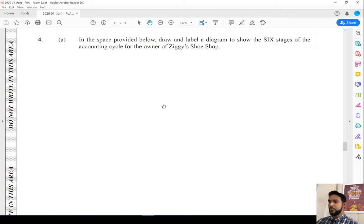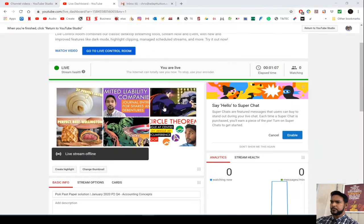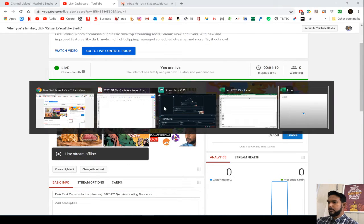Let's get to the question. In the space provided below, draw and label a diagram to show the six stages of the accounting cycle for the owner of Ziggy's Shoe Shop. When I was testing this earlier, I realized the side-by-side split might be hard to see on phones, so I'm going to be switching back and forth between the question and the solution.